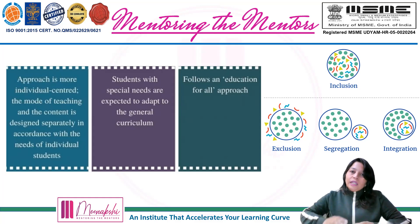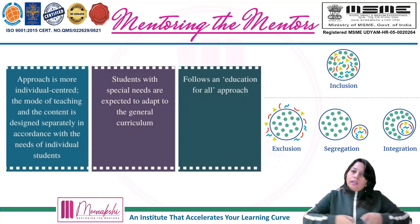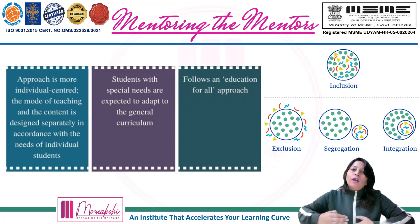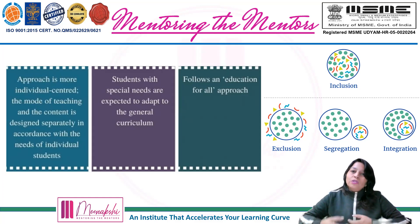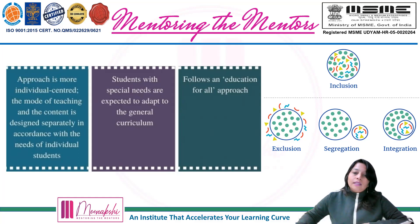Her individual student ke need ke accordingly unka curriculum design kiya jata hai. Wo alag hota hai as compared to the students who are learning in a general school. In ka special curriculum frame kiya jata hai as per their needs. But in integrated education, students with special needs are expected to adapt to the general curriculum — unko general curriculum ke according adapt karna padta hai. Unhe kuch facilities, kuch changes, kuch better options diye jate hai. But when it comes to inclusive education, it follows an education for all approach — same education, same curriculum, same facilities, same kinds of activities.